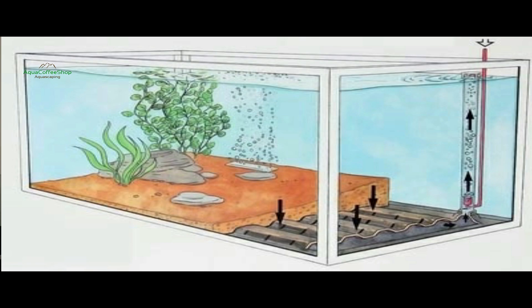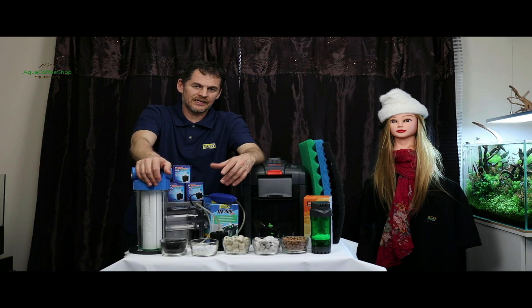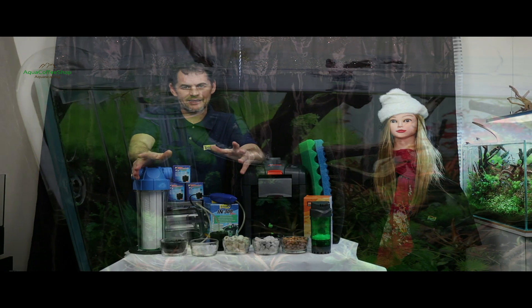The disadvantages of this filter are that it can clog very quickly. The substrate filter is easy to set up and is relatively maintenance-free once put into operation. The disadvantage of substrate filters is that they clog and are not exactly suitable choices for planted aquariums.